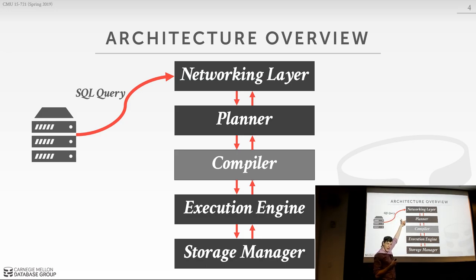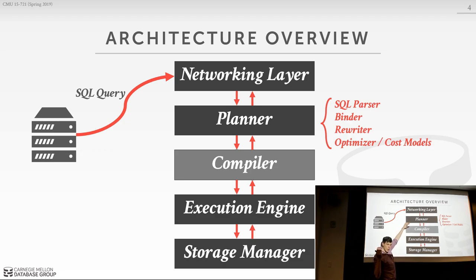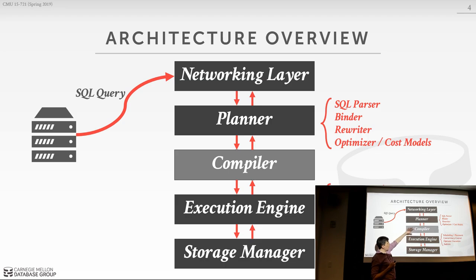The first thing the query lands in is what we're calling the networking layer, which is what we'll talk about today — how do we actually communicate with the database server and send it a query. Then it goes down the stack through the planner, compiler, execution engine, and storage manager. The planner parses the SQL query, looks in the catalog, maps table names to internal identifiers via the binder, has a rewriter phase for static query optimizations, and then there's the optimizer with the cost model. Then it goes through the compiler — this is unique to modern systems and not covered in intro class, but the performance benefit is significant.